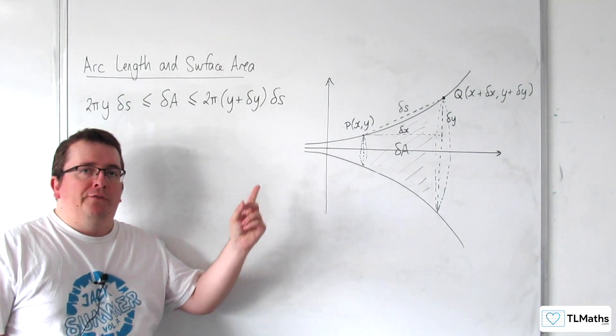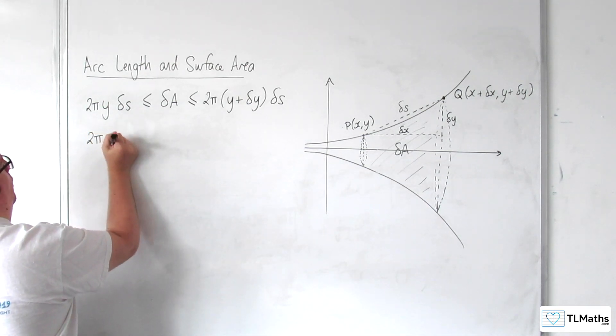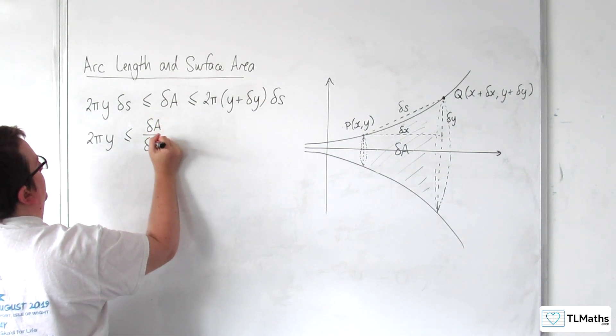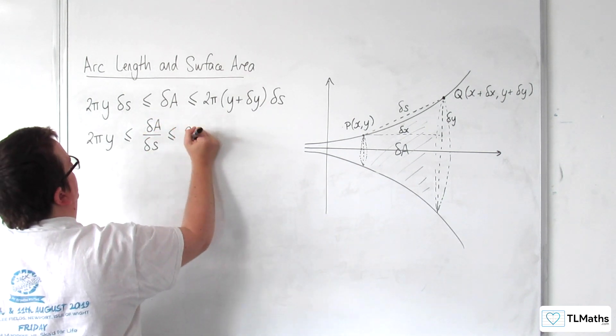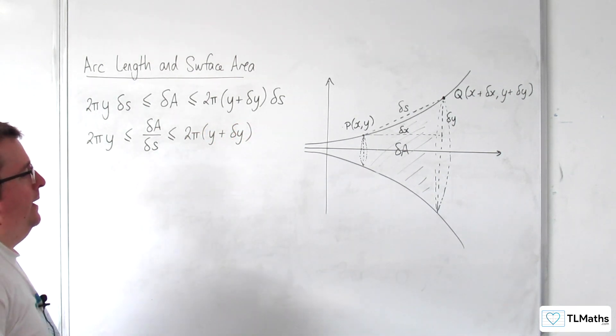Now if I divide through by delta S, I get 2πy is less than or equal to delta A over delta S is less than or equal to 2π(y + delta y).